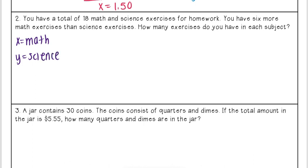Now I'm going to look for some totals. I see I have a total of 18 math and science exercises, so that means when I add my math and science exercises together I get 18. So that means I just have x + y = 18.